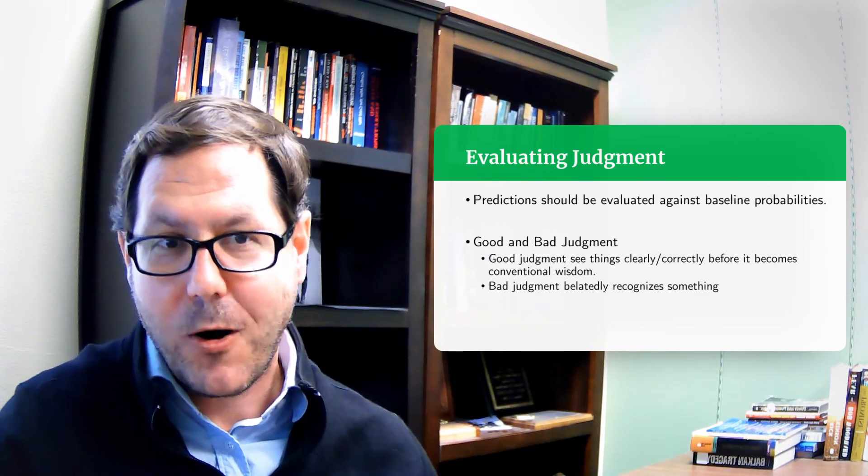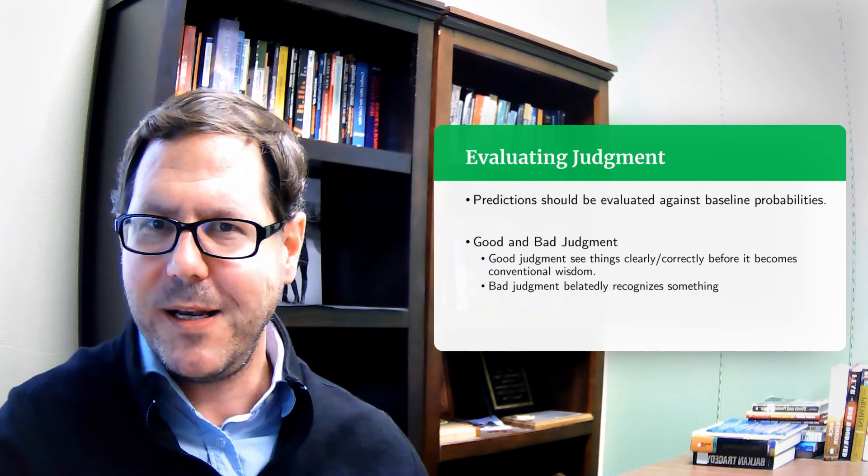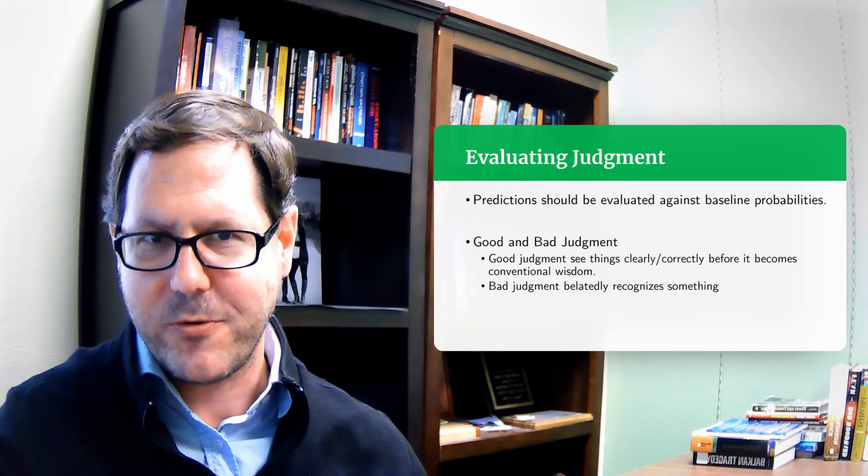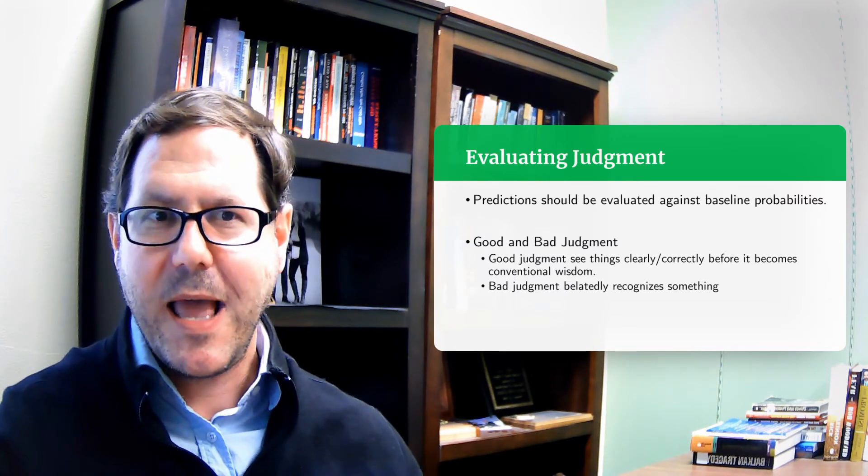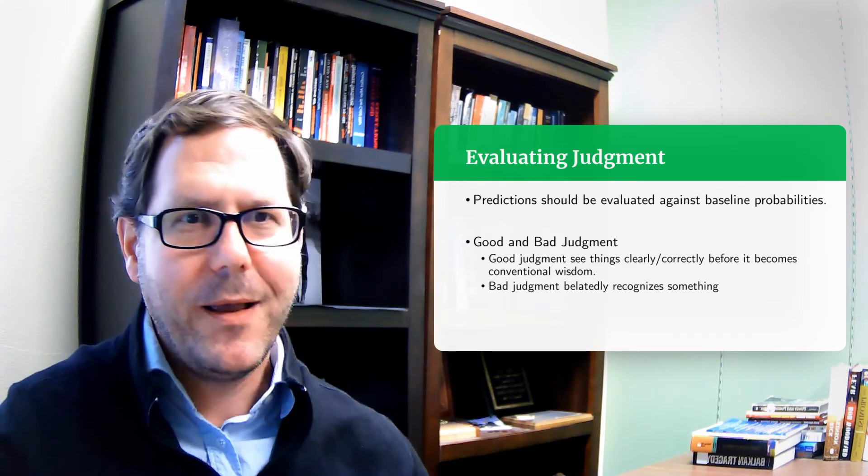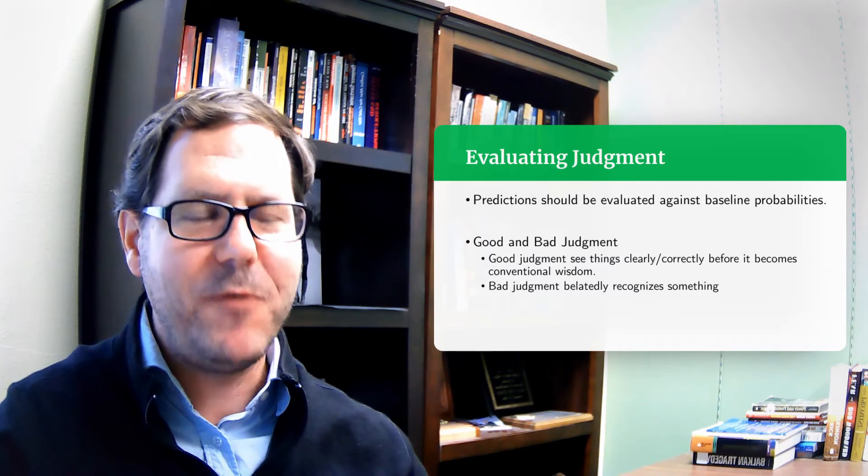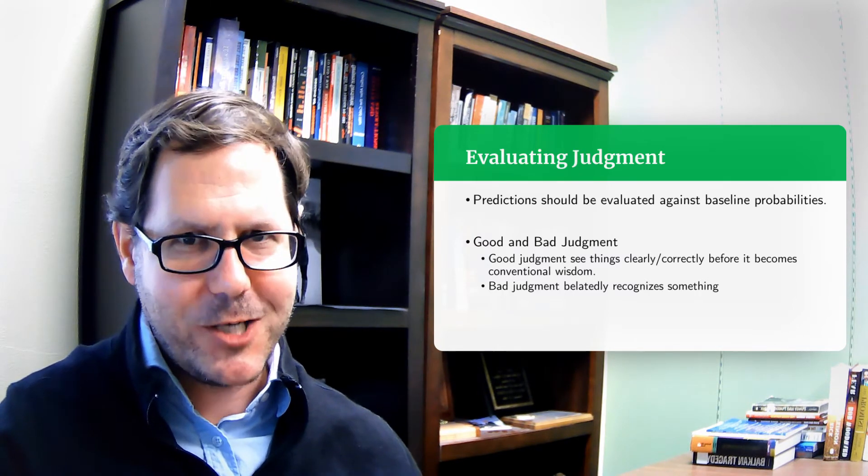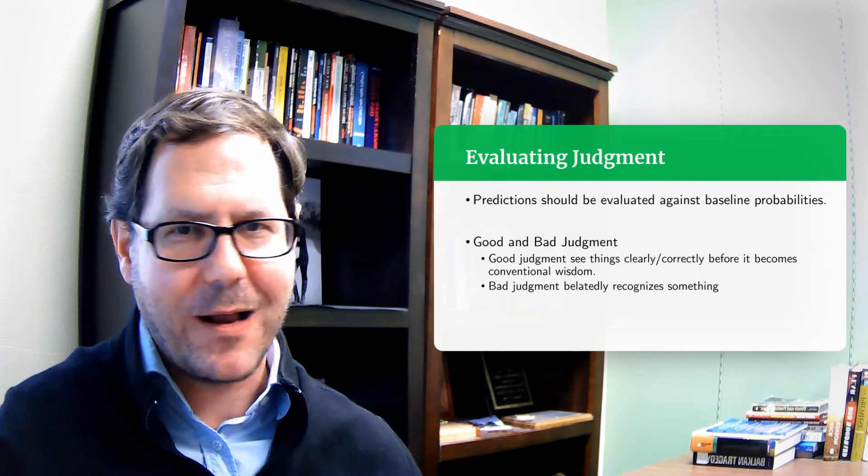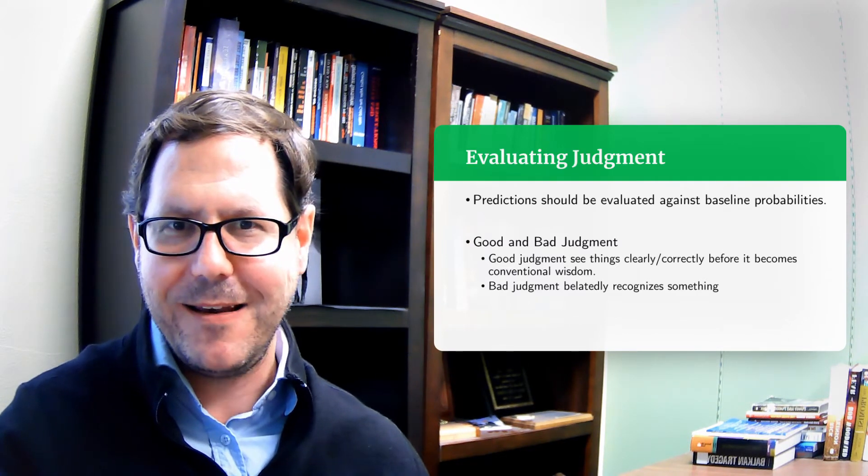Then the other part of this is our ability to see things before others. So good judgment according to Tetlock is seeing things clearly and correctly, so accurate, but to do that before it becomes conventional wisdom.